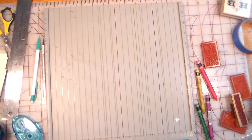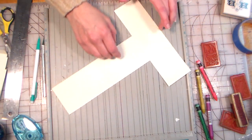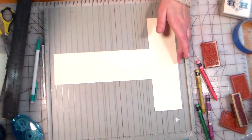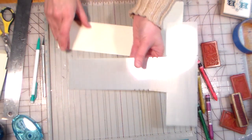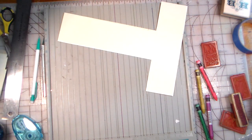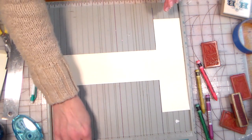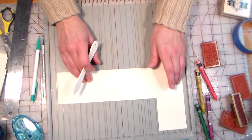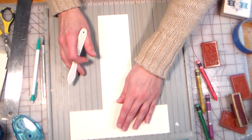Alright so the next thing we need to do for our card is we've already traced our template and there are little marks on our template, if you look here you can kind of see there's these little triangle marks there and there are scoring lines,